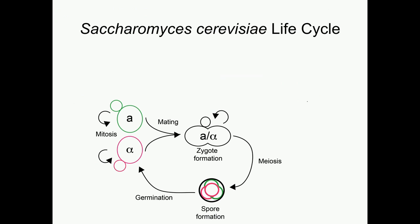Before I get to Hansenula polymorpha, I'm going to start with Saccharomyces cerevisiae. To briefly review the life cycle: Saccharomyces divides mitotically either as a haploid or a diploid, but it shows a very strong preference for the diploid state. When you have two cells of opposite mating type, A and alpha, they'll readily mate to form a diploid, and then that diploid has to encounter very specific environmental conditions to undergo meiosis, sporulation, and restore the haploid state.